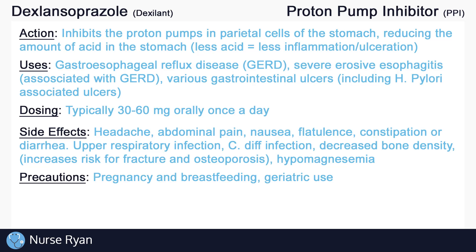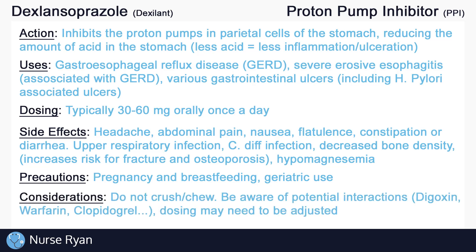We want to exercise caution in anyone who already has conditions like osteoporosis or hypomagnesemia. We also want to exercise caution during pregnancy, breastfeeding, and geriatric use, as dosing may need to be adjusted. It's very important not to crush or chew proton pump inhibitors, as they are often administered as enteric-coated capsules, which require the medication to pass through the stomach and into the intestine where they can then be absorbed. If chewed or crushed, the medication will be rendered ineffective by the acid in the stomach.